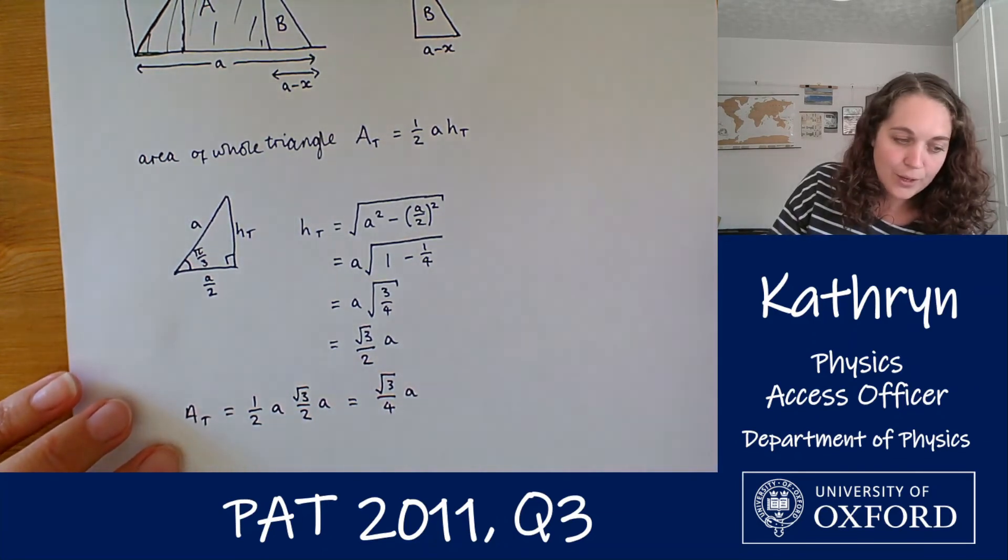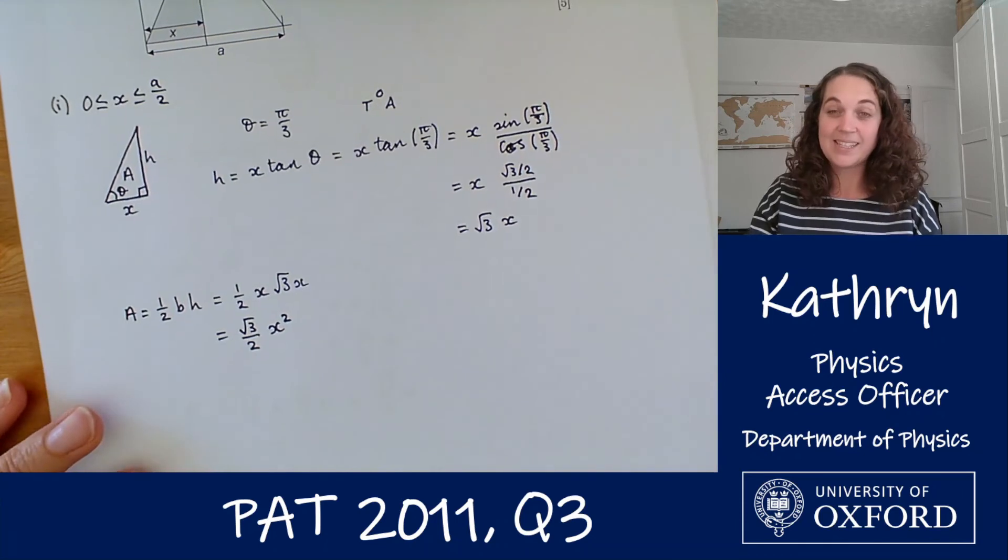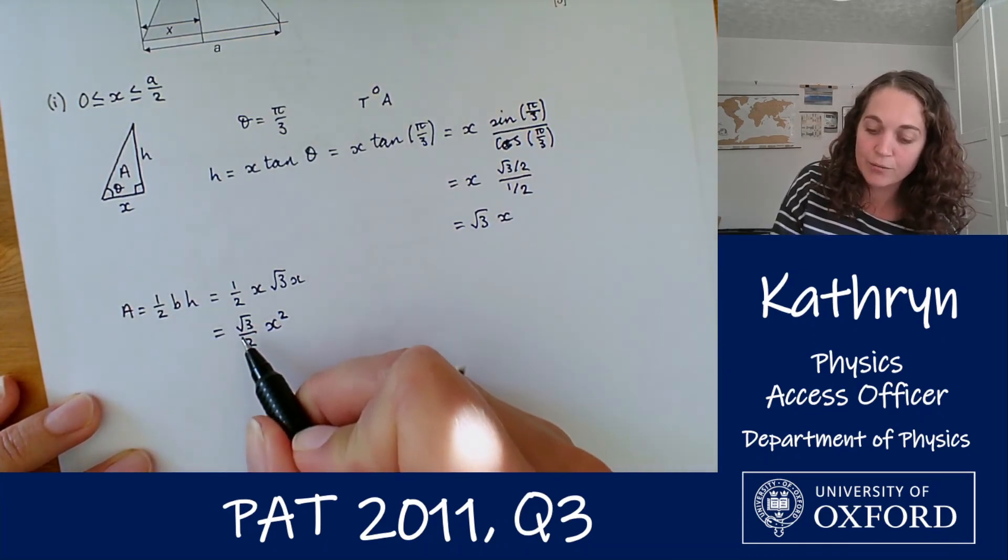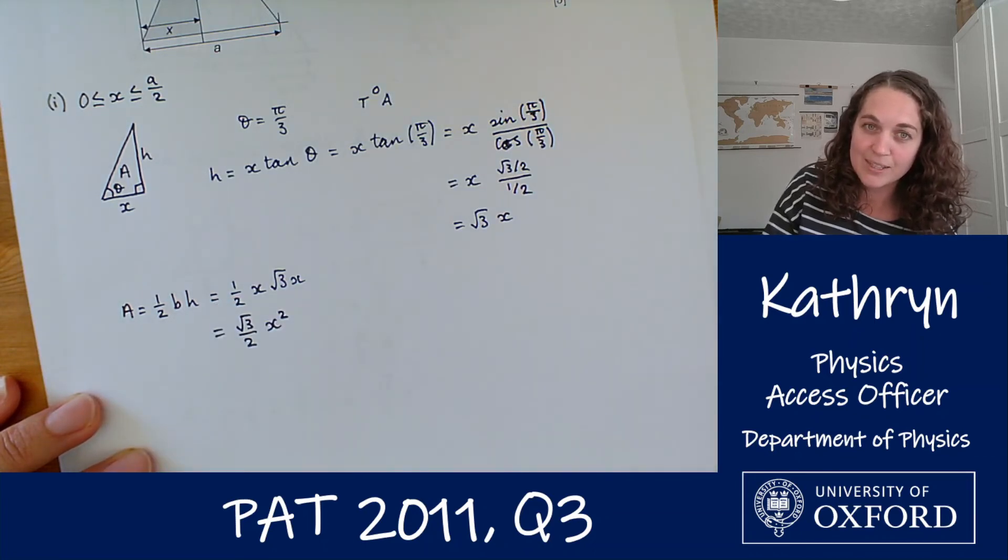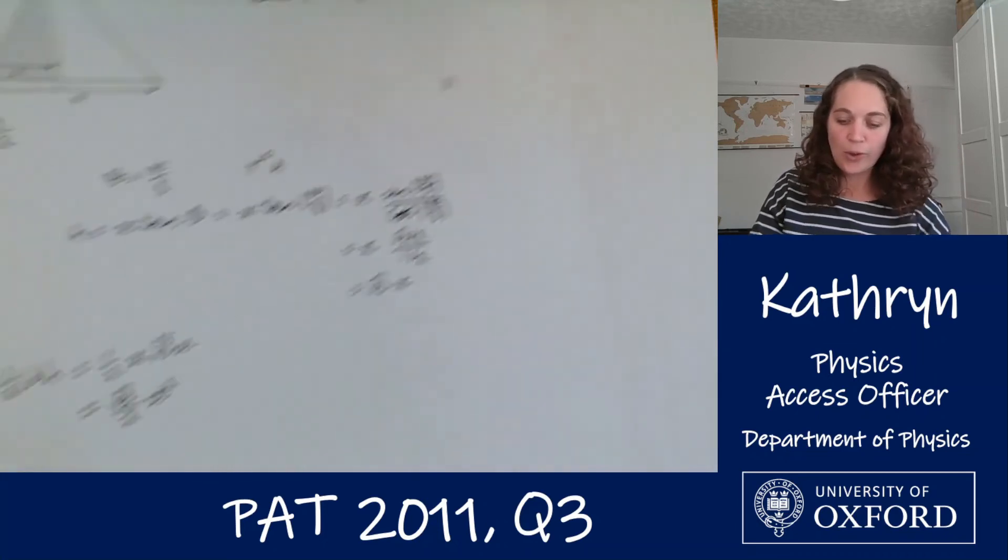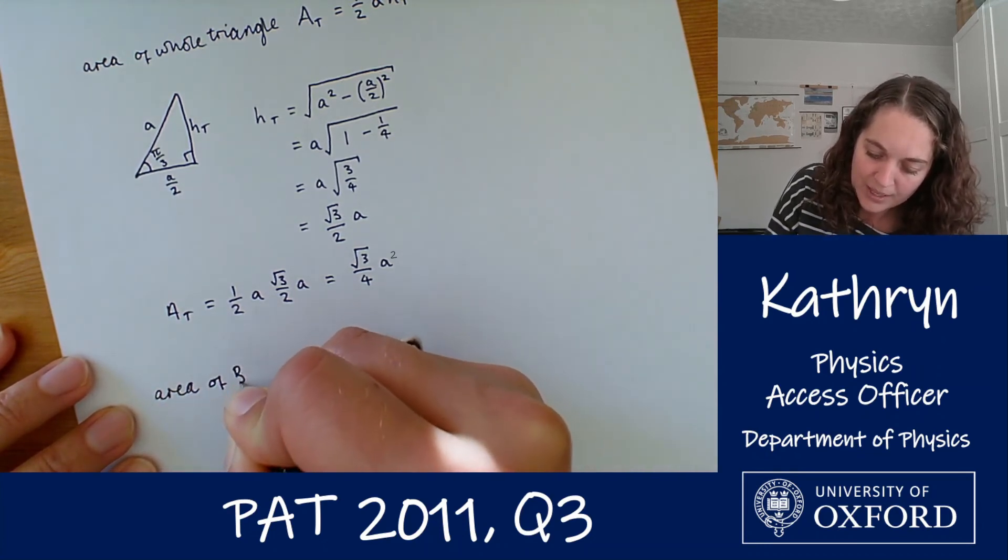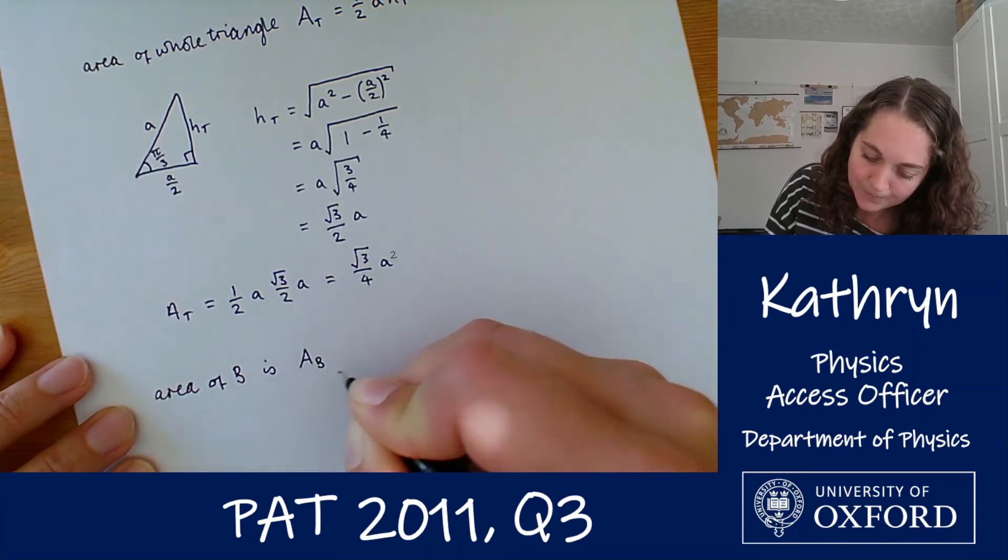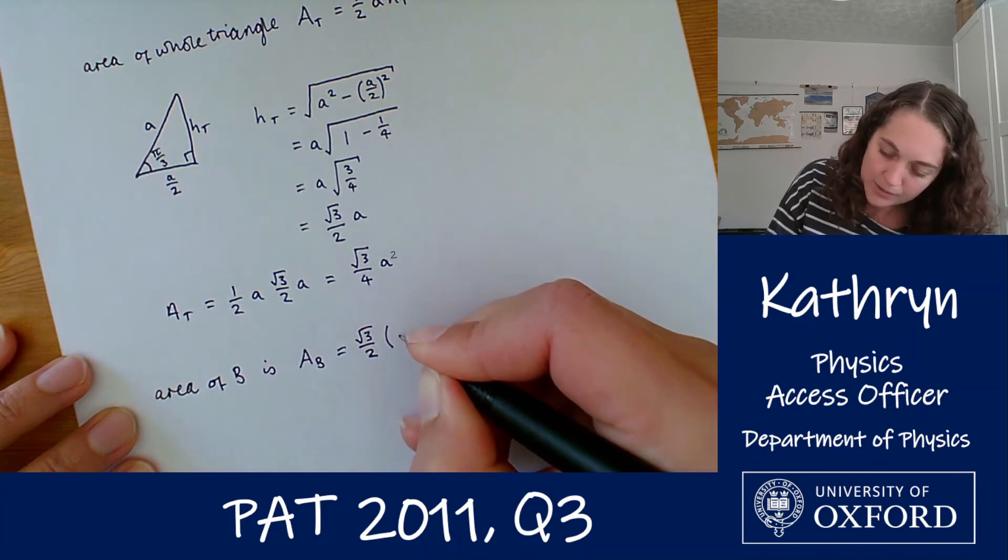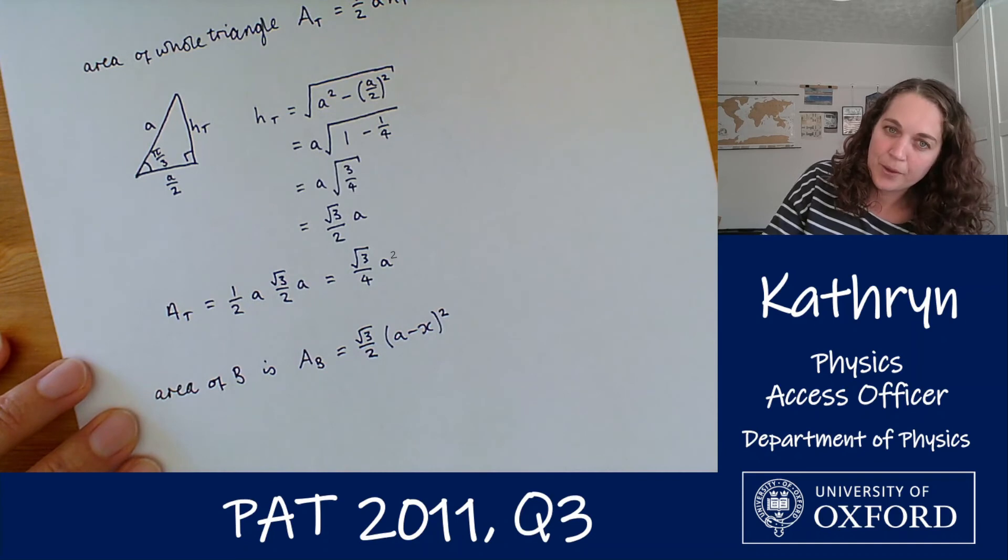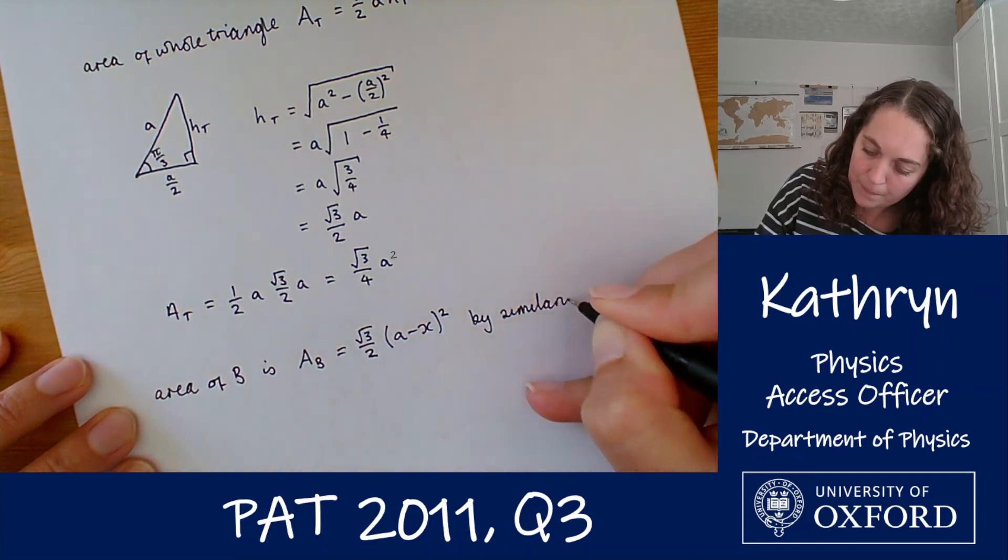So we know that on this triangle for a base length of x, we have a height of root 3x and a total area of root 3 over 2 times x squared. Well this time our base isn't x, it's a minus x, but the formula for our area is going to be the same if we exchange a minus x with x. So let's use that. So the area of b, let's call it A_b, equals root 3 over 2 times a minus x all squared. And that is by similarity with part one.